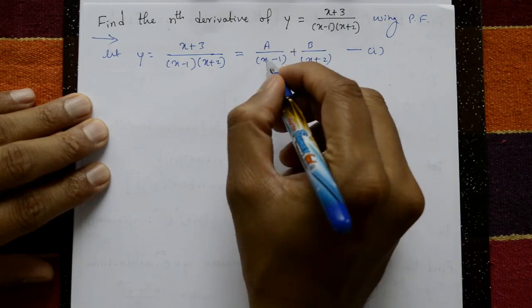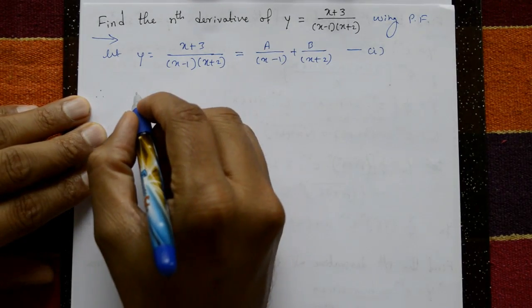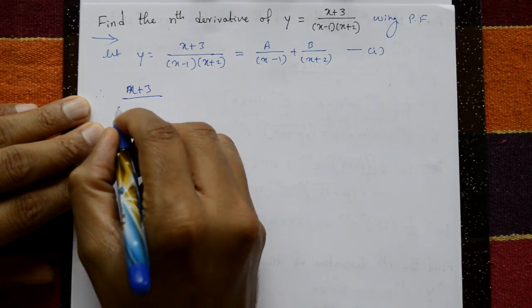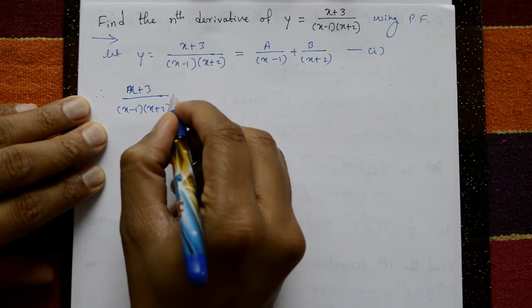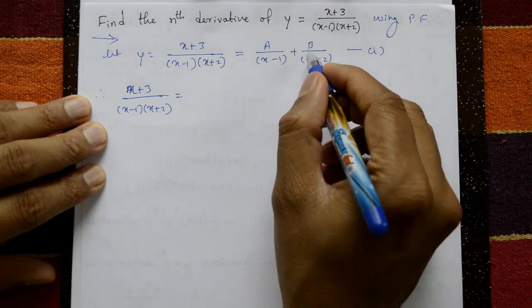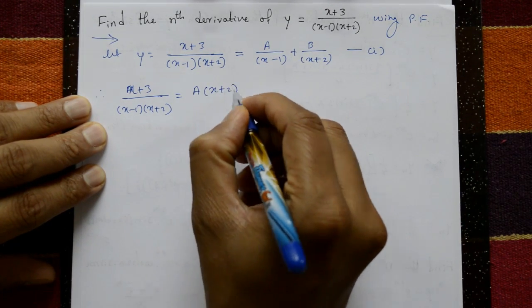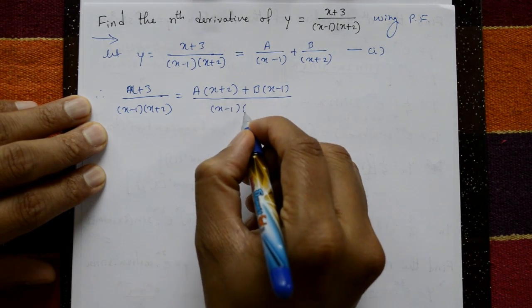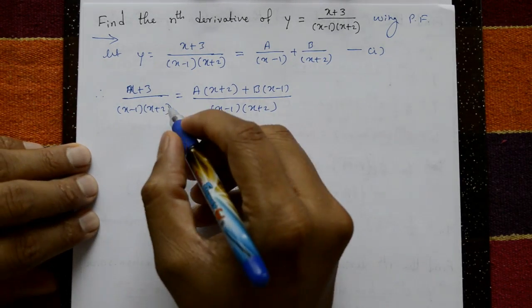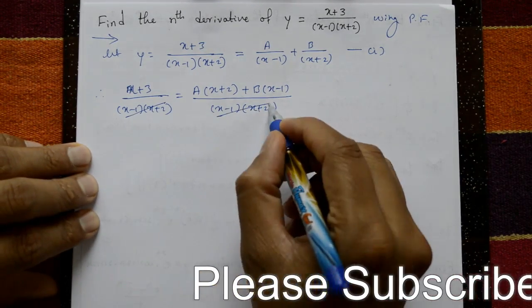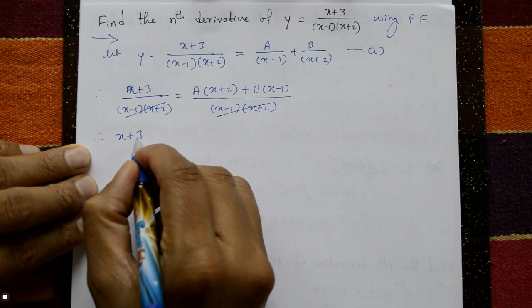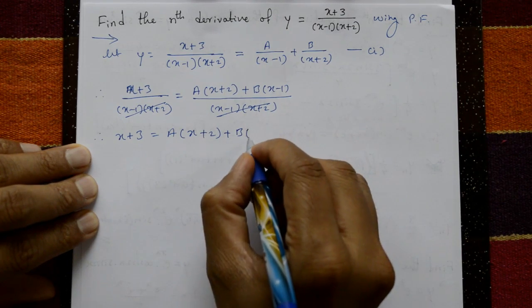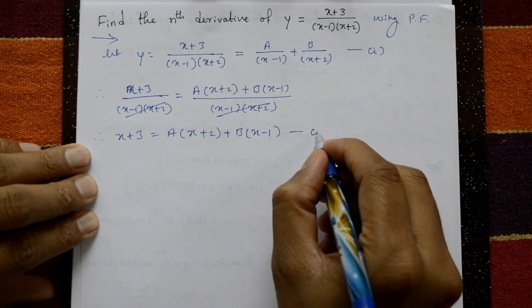Now (x+3) / [(x-1)(x+2)] equals [A(x+2) + B(x-1)] / [(x-1)(x+2)]. Both side denominators cancel, so therefore x+3 = A(x+2) + B(x-1). Call this equation number 2.